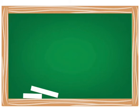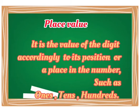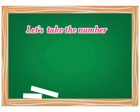Place value — it is the value of a digit according to its position or place in the number, such as ones, tens, hundreds, etc. I repeat: it is the value of the digit according to its position or place in the number, such as ones, tens, hundreds, etc. Now let us understand this with the help of a number.